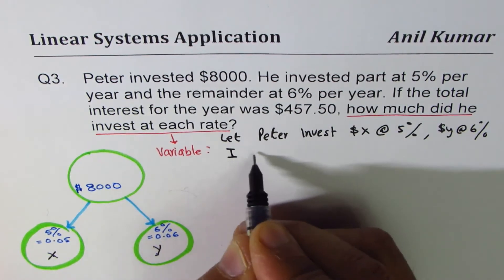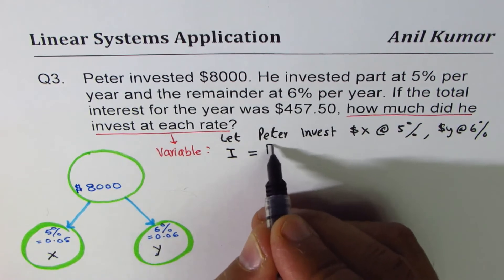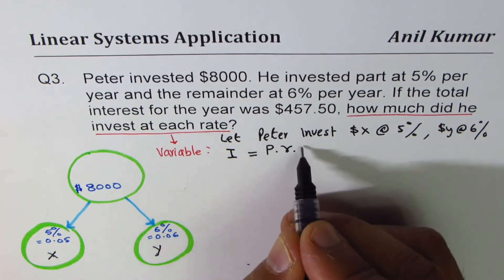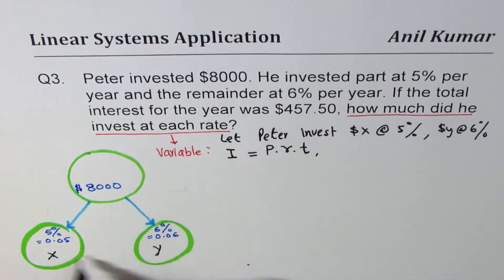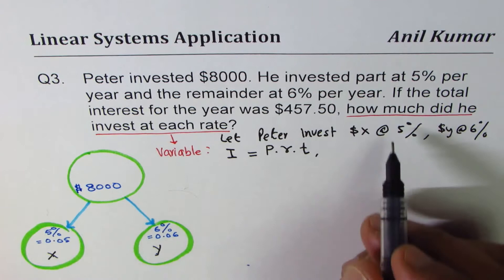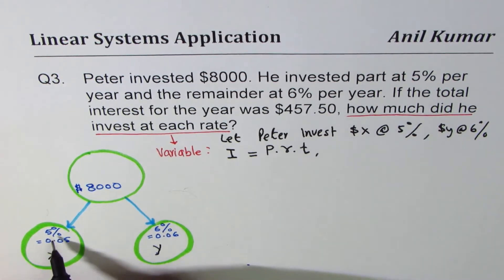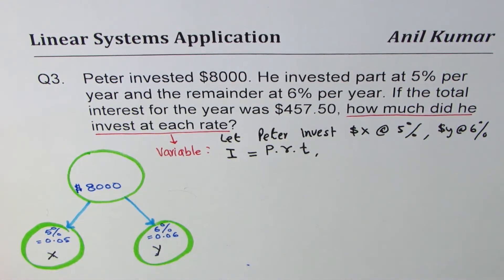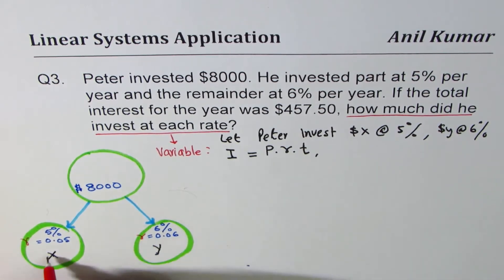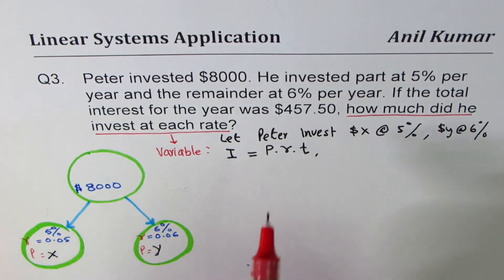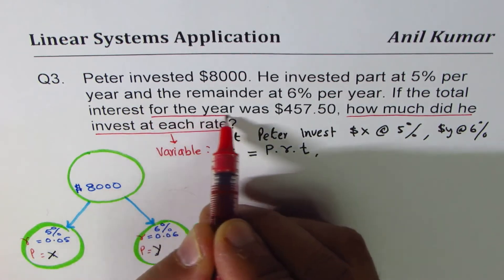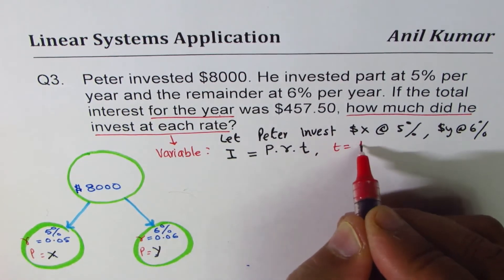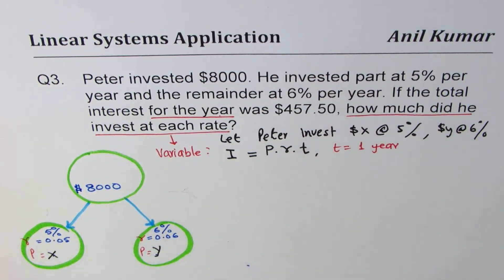Interest equals Principal times Rate times Time. In our case, the principals are x and y, the rates are 5% and 6%, and time T is one year. So in both cases T equals 1.